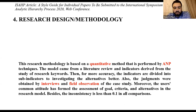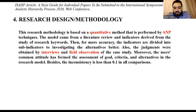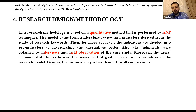Regarding research methodology, the method is based on a quantitative approach performed by the AHP technique. The model came from a literature review and indicators derived from research keywords. For accuracy, indicators are divided into sub-indicators to investigate the alternatives better. Judgments were obtained through interviews and observations of the cases. User comments and attitudes formed the assessment of all criteria and alternatives in the research model. The inconsistency ratio is less than 0.1 in all comparisons.